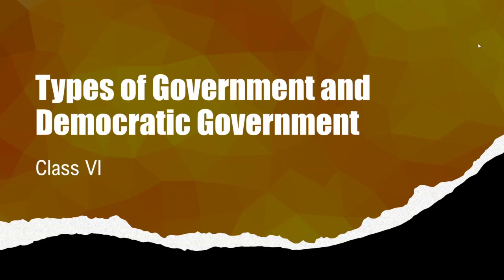These three levels work at the national level, the state level and the local level. Further, we talked about the three organs of the government, that is legislature, executive and judiciary. And we also talked about the parliament, which is a legislative body.